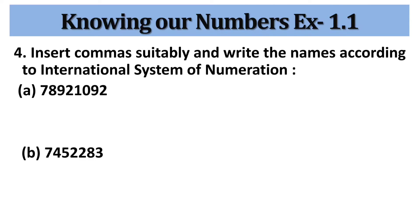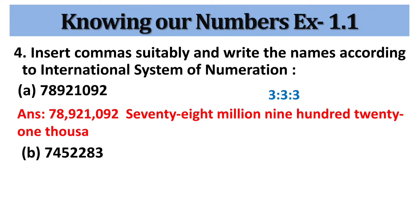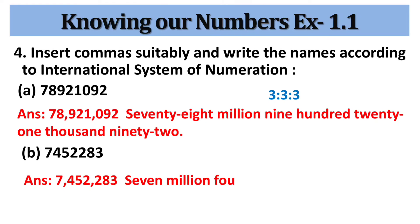In the next problem, we have to insert commas suitably and write the names according to the international system of numeration. For that we use the rule 3:3:3, so after every 3 digits starting from the right we put commas, and we get 78,921,092. In the next problem, following the international system, we get 7,452,283.